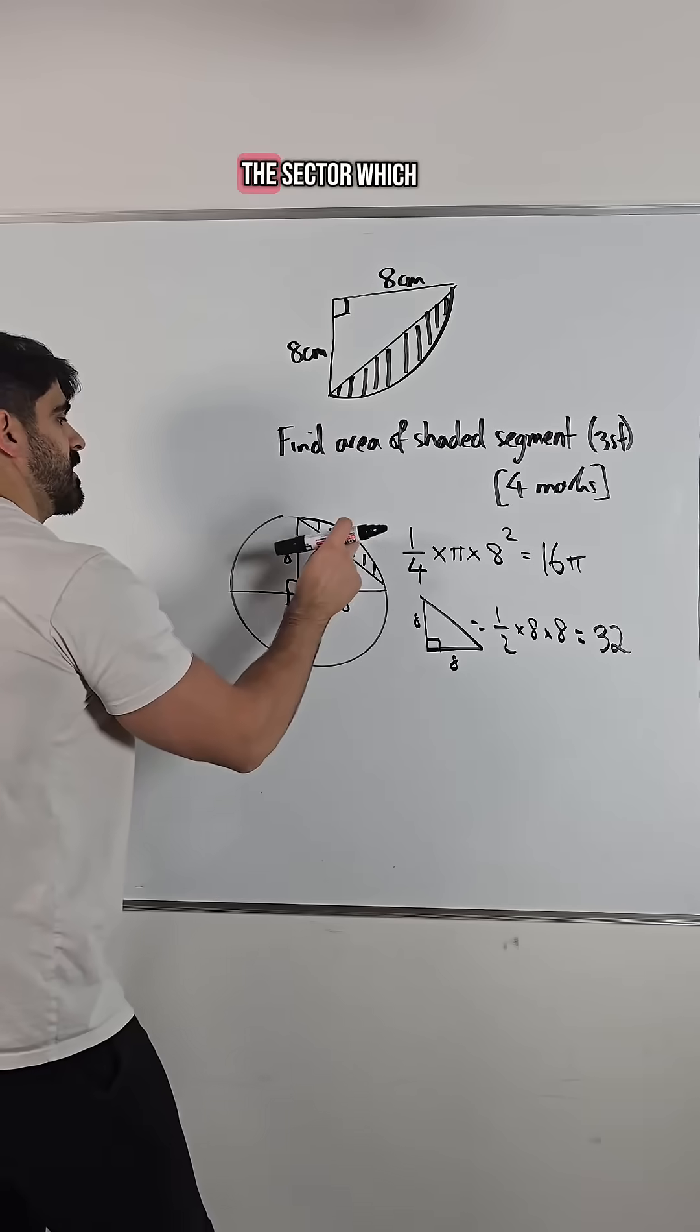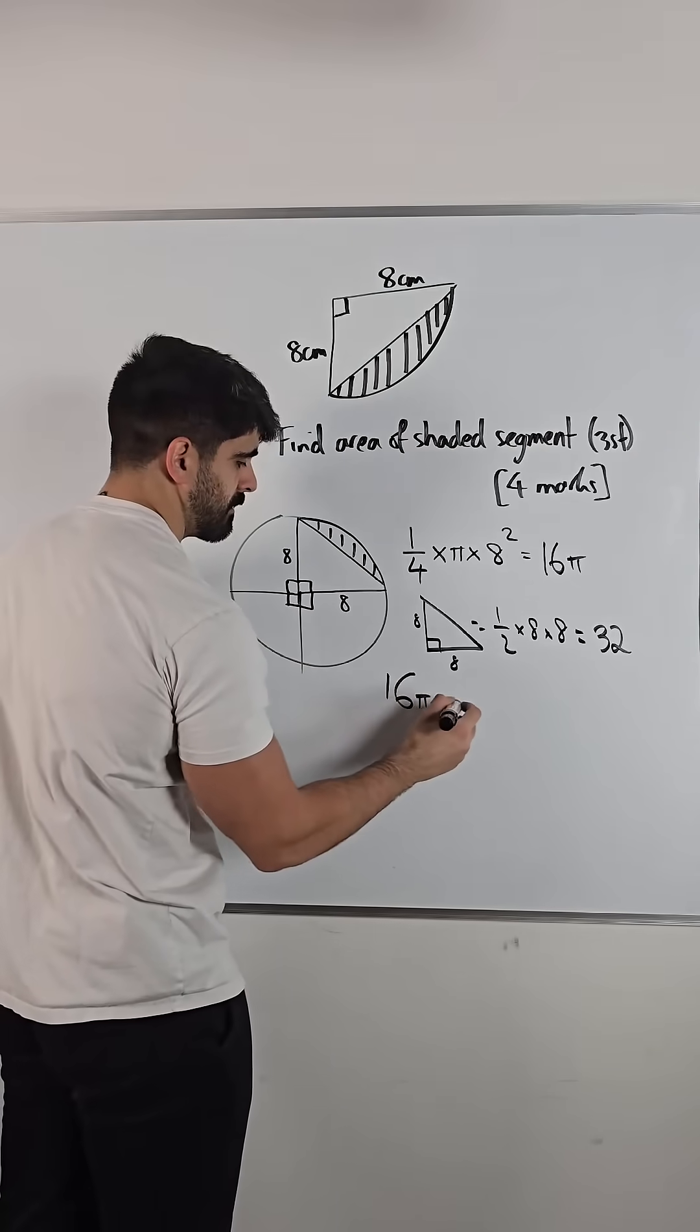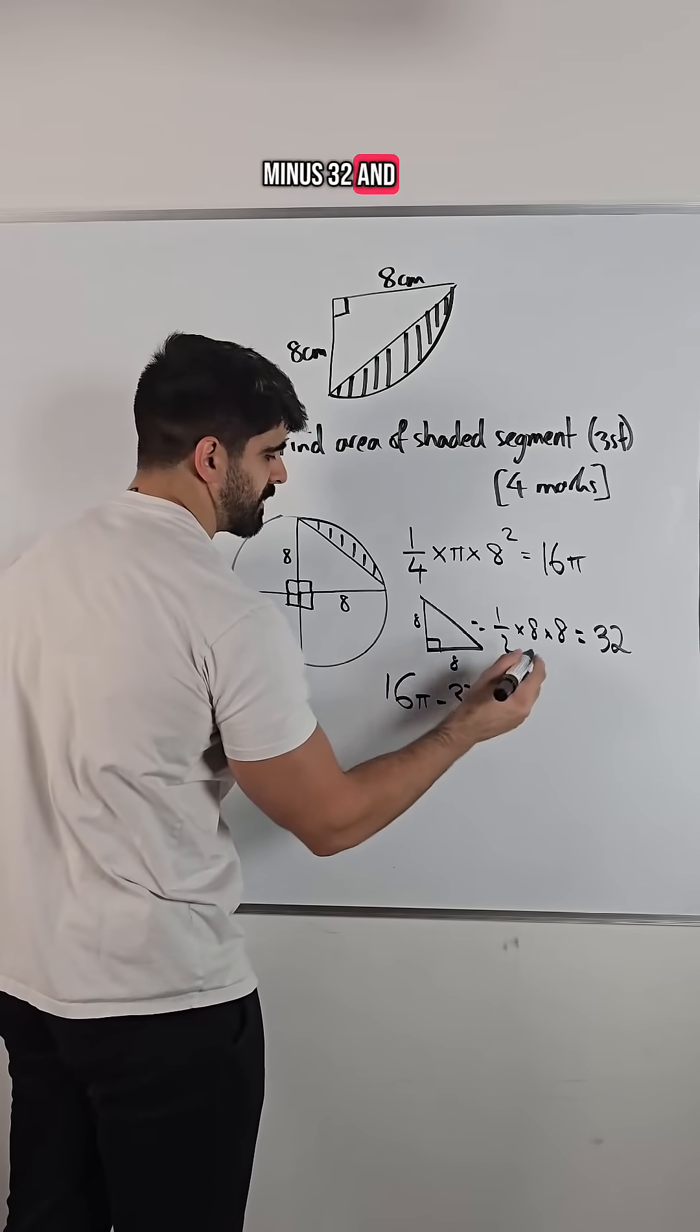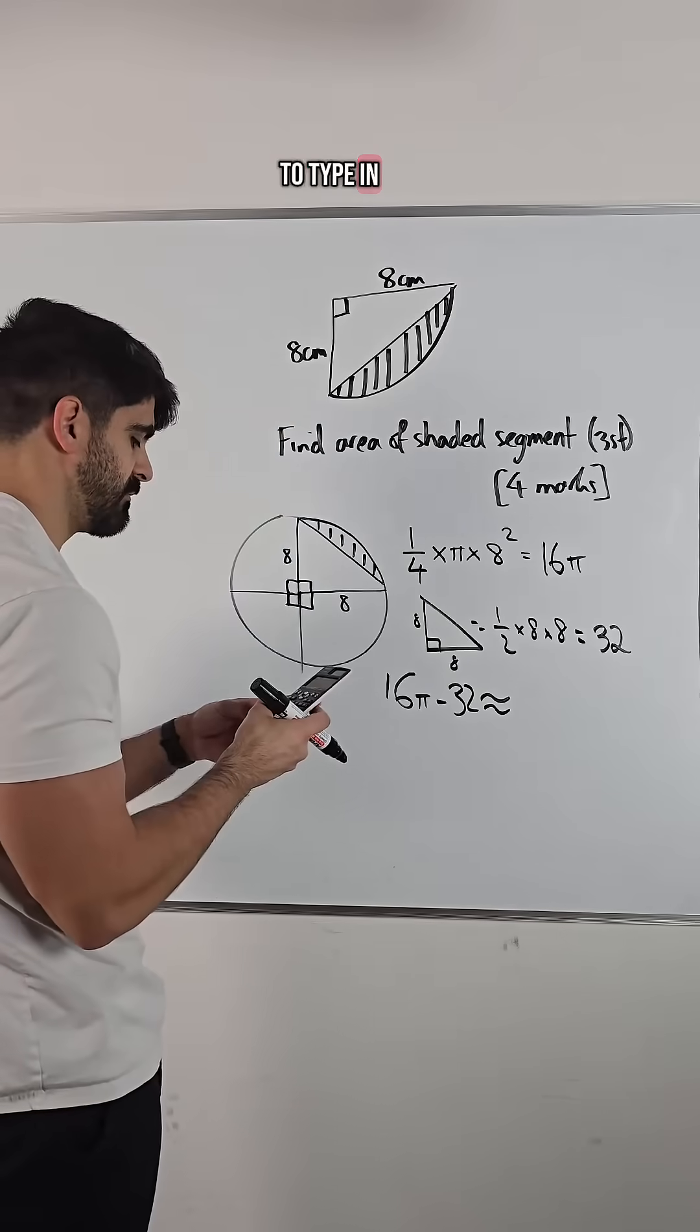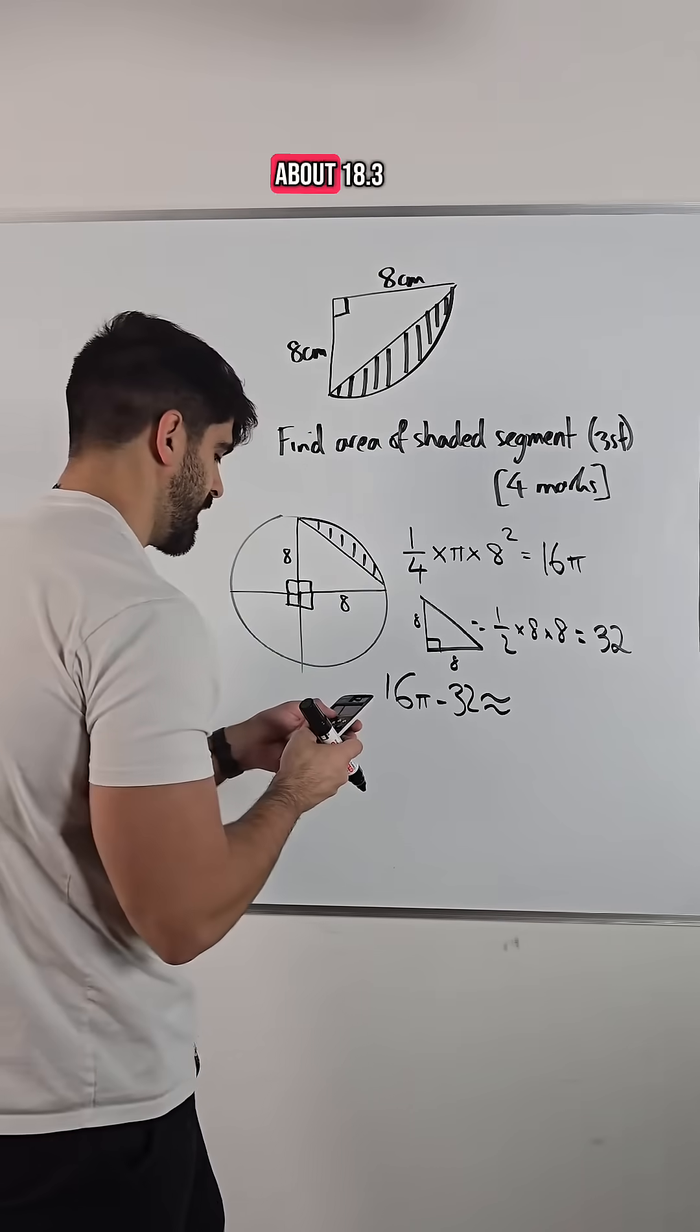So we're doing the sector, which is 16 pi minus 32. And for that extra mark, they wanted you to round it. So 16 pi minus 32 is about 18.3.